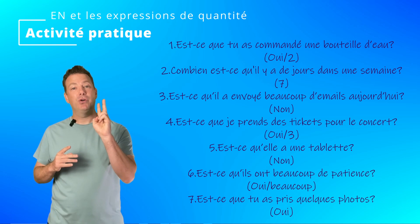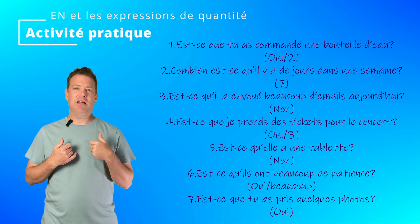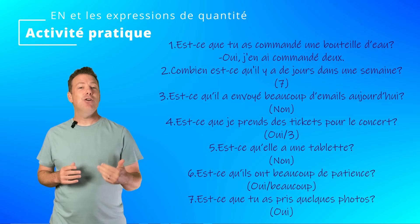Est-ce que tu as commandé une bouteille d'eau? Oui — the EN pronoun in front of the verb, and you reply with the JE form. Oui, j'en ai commandé. Très bien. J'en ai commandé deux.